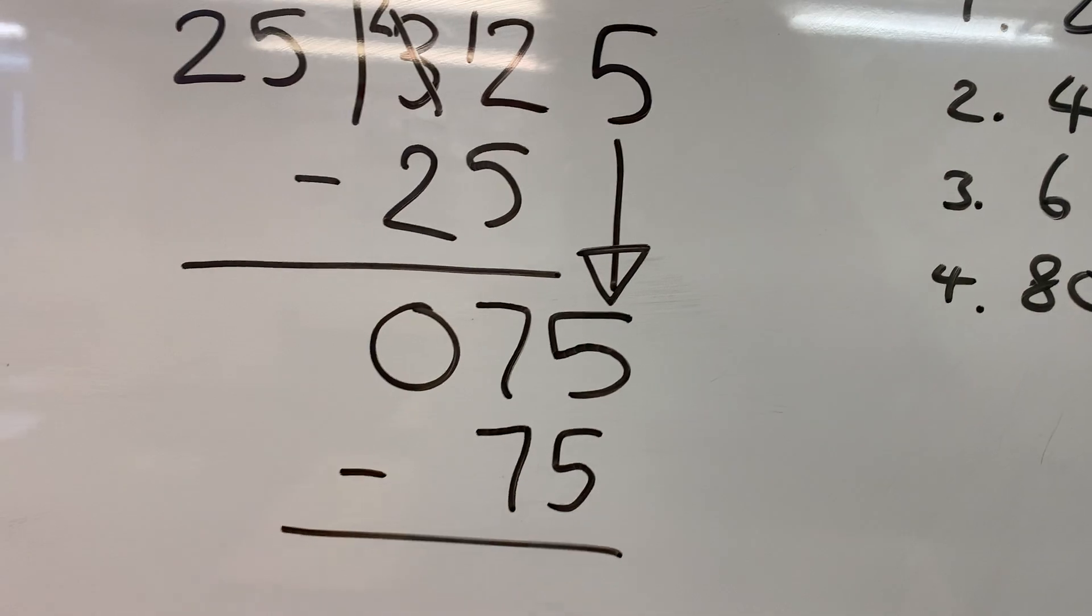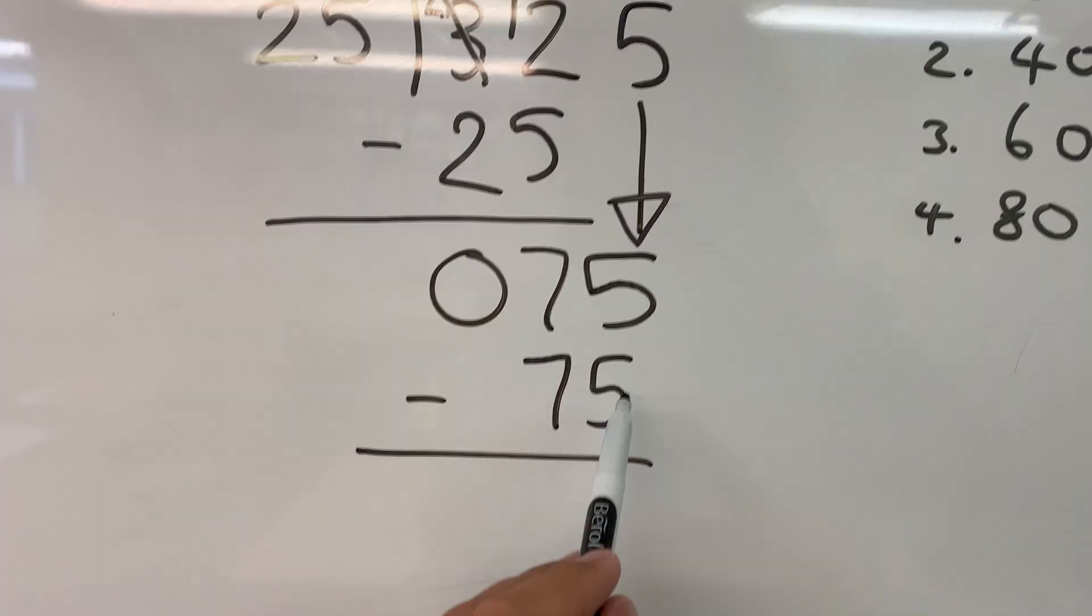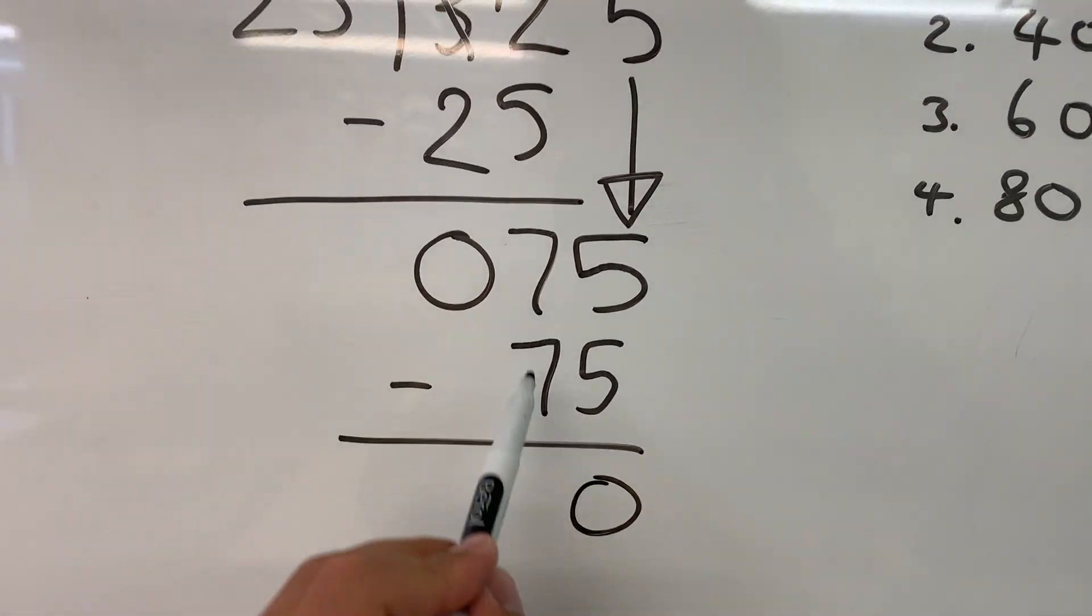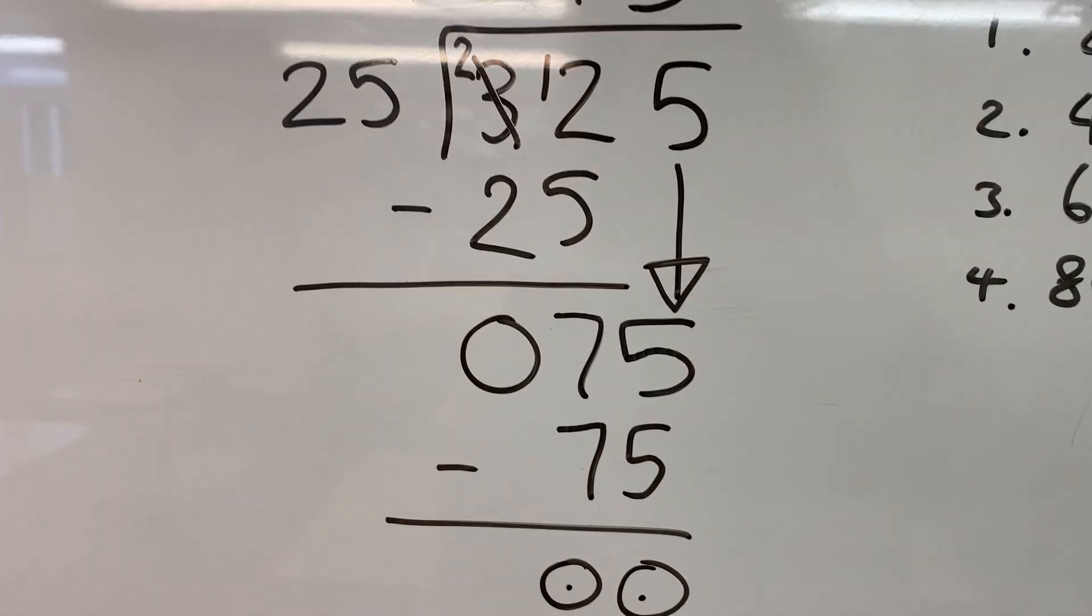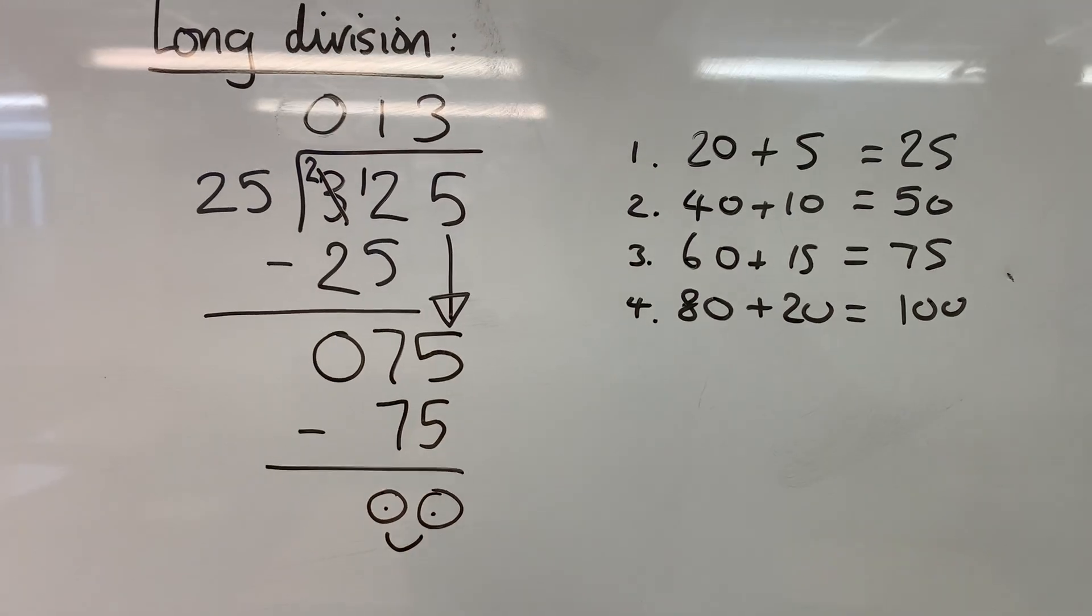And we take that away, and if all is good, we should get to 0. 5 take away 5 is 0. 70 take away 70 is 0. And I can draw a nice smiley face at the bottom, because we've got there. And that's your long division method.